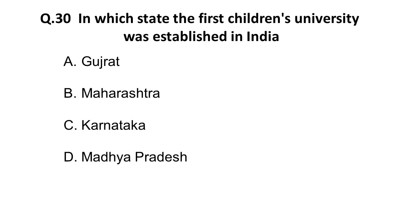Question 30: In which state was the first children's university established in India? Options: A) Gujarat, B) Maharashtra, C) Karnataka, D) Madhya Pradesh. The correct answer is A: the first children's university was established in Gujarat.